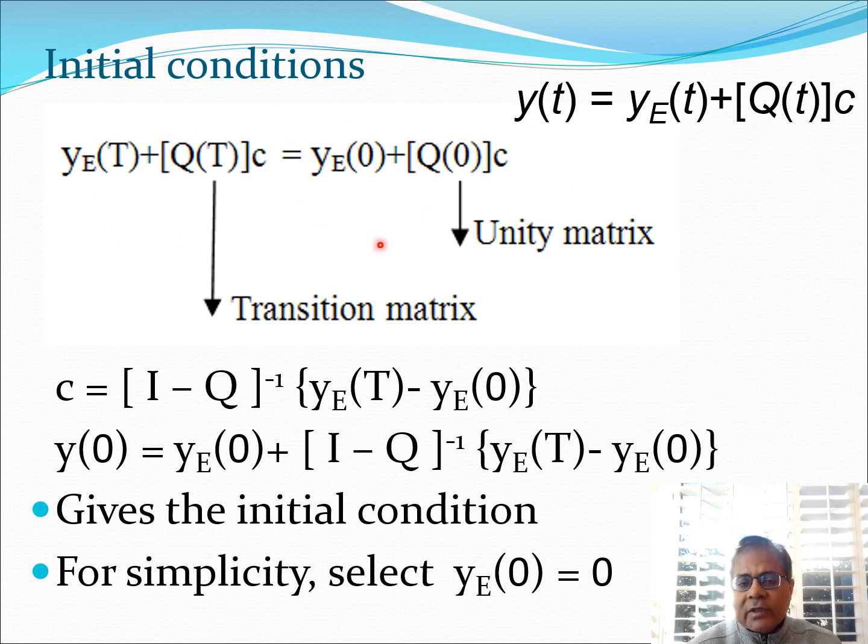Now I know that Q(T) is the transition matrix at the end of the time period T, and Q(0) is the unit matrix. From this equation I can obtain the value of this c, and c is given here. This essentially lets me write down the solution y(0) in this particular form. One of the important things here is that this equation gives us the initial conditions in the Floquet force response which we need to use to essentially solve for the steady state.